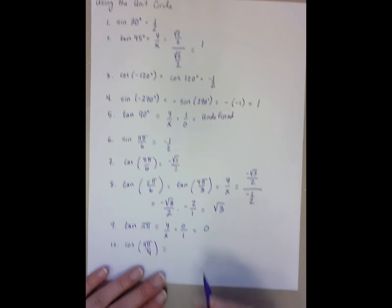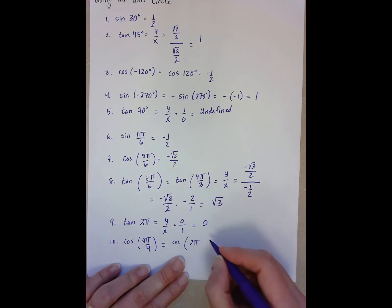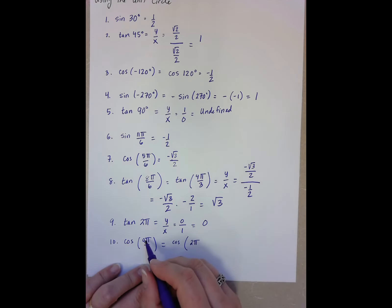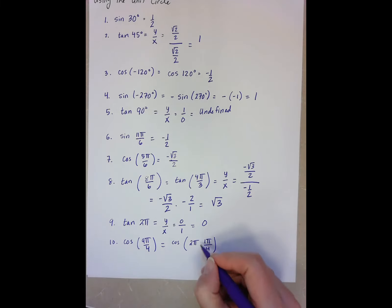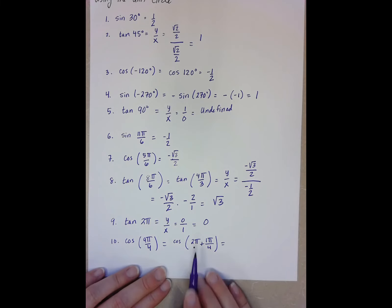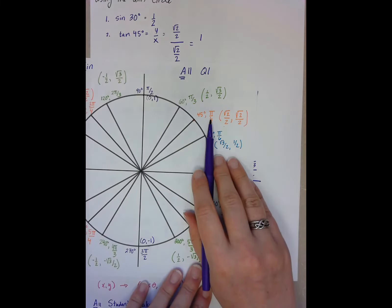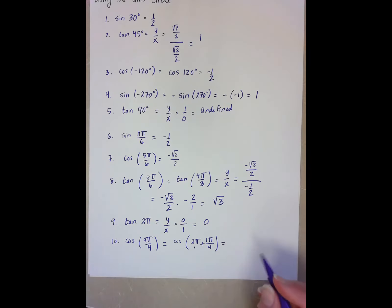And one way to simplify that is to recognize that I can reduce this to be 2 pi. 4 goes into 9 2 times with a remainder of 1. So now I'm looking, and we know that cosine of 2 pi just gets me around the circle one time. So now I'm looking for the pi over 4. And I'm looking for cosine, which is the x. So root 2 over 2.